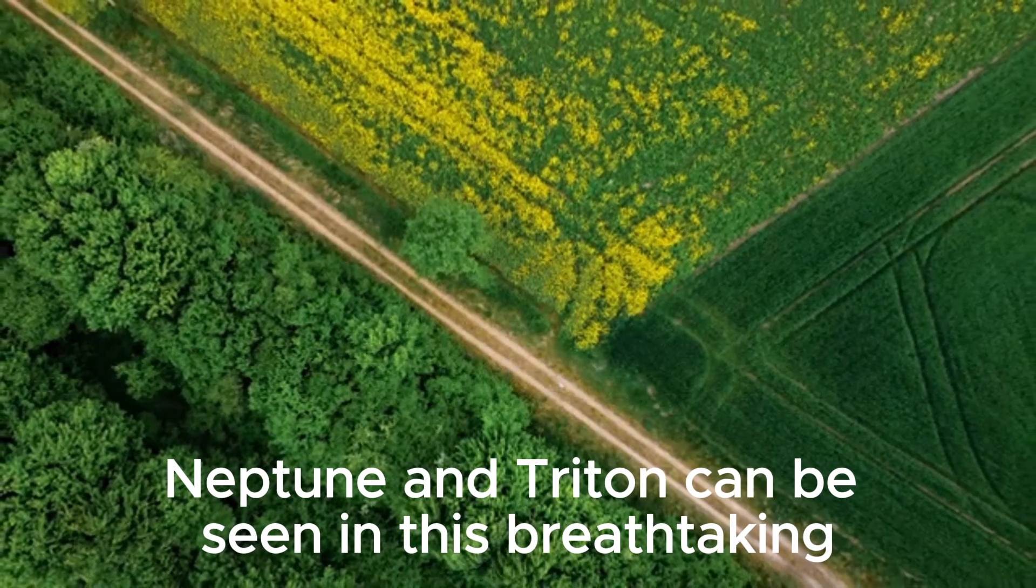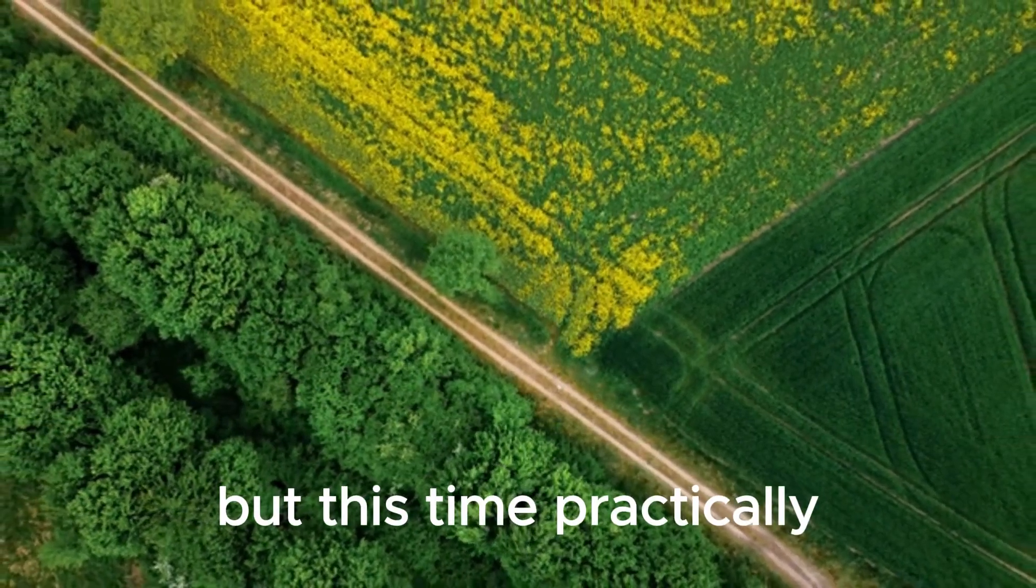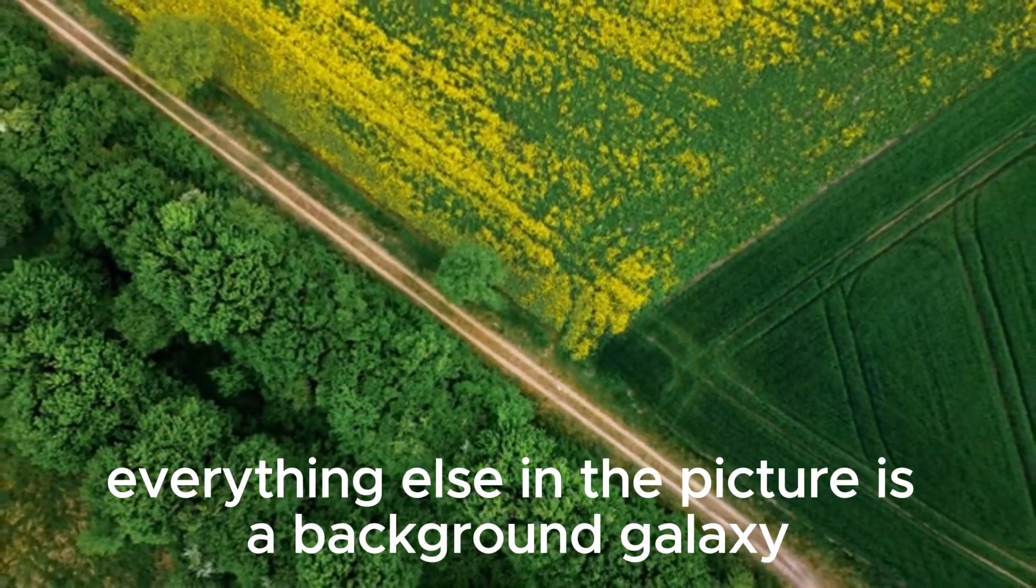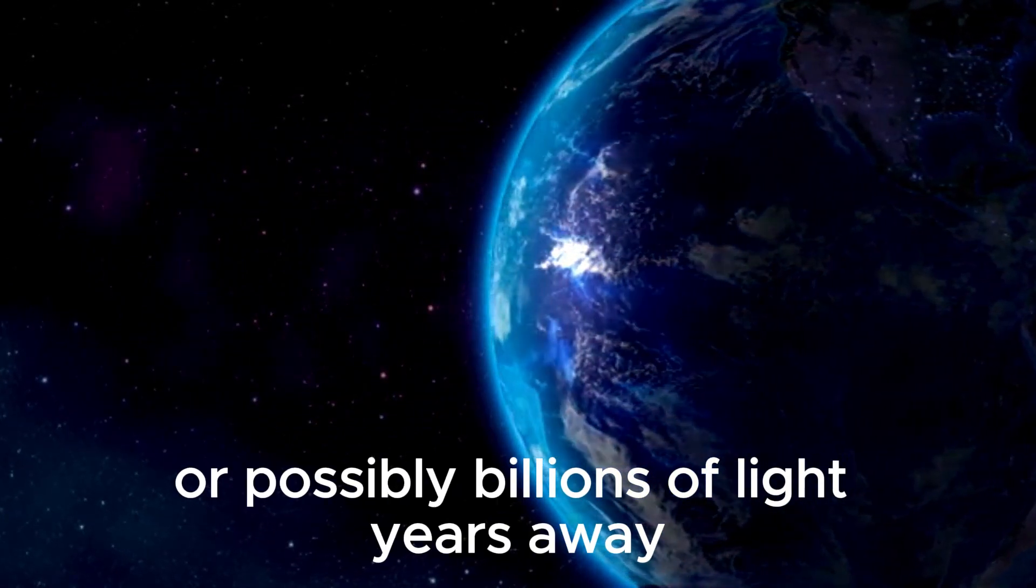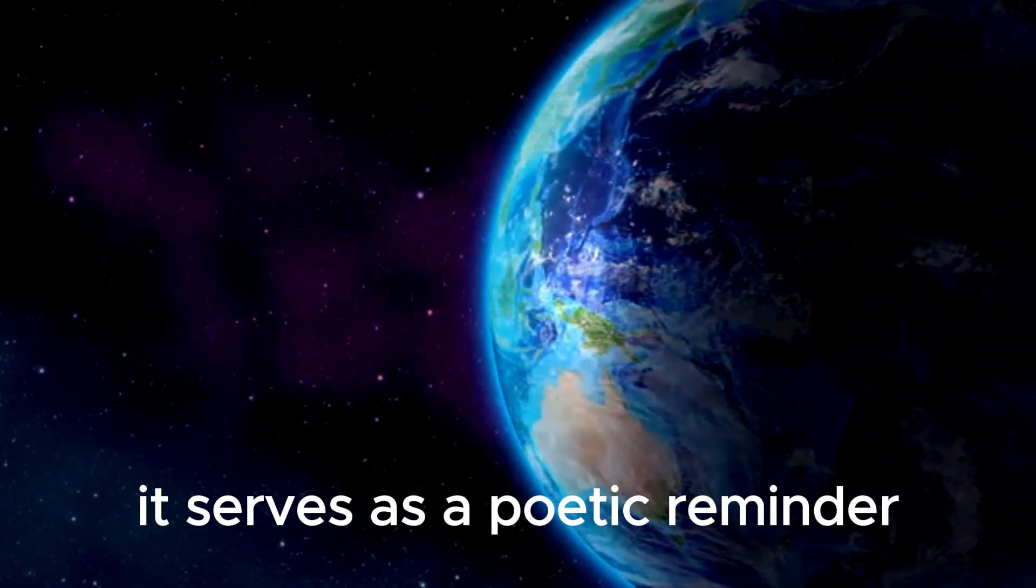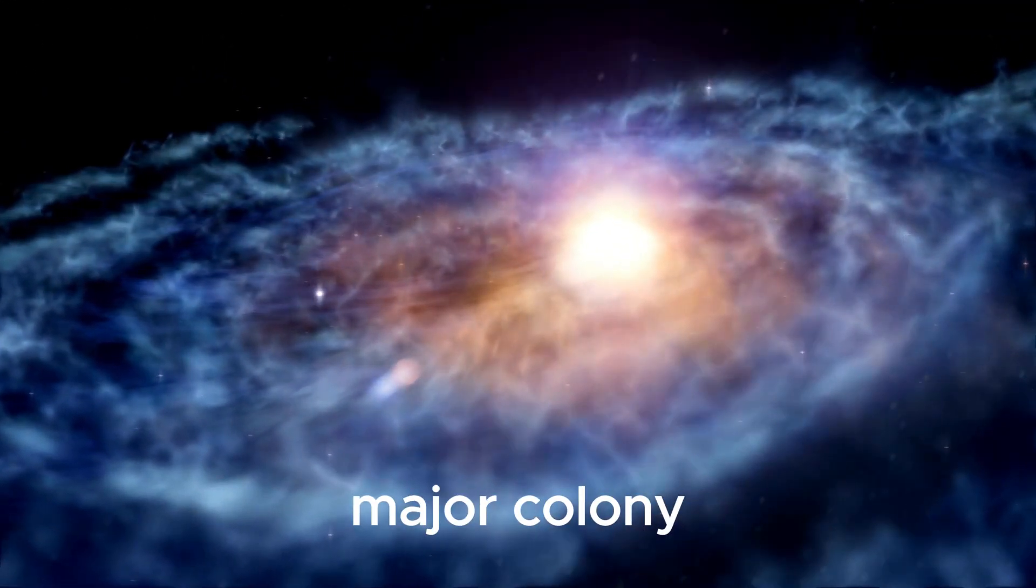Neptune and Triton can be seen in this breathtaking wide-angle view once again. But this time, practically everything else in the picture is a background galaxy that is hundreds of millions or possibly billions of light-years away. It serves as a poetic reminder that Neptune is the solar system's final major colony.